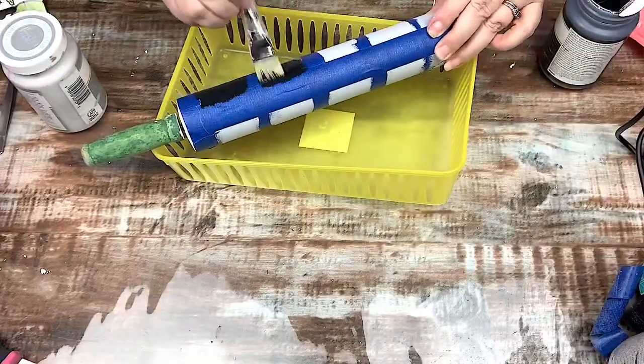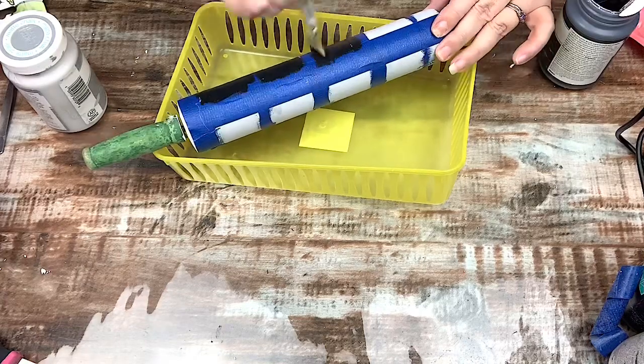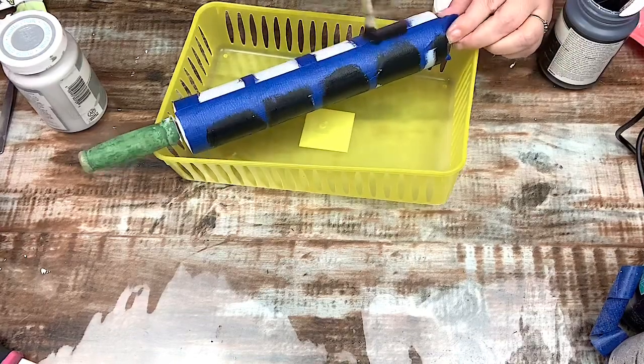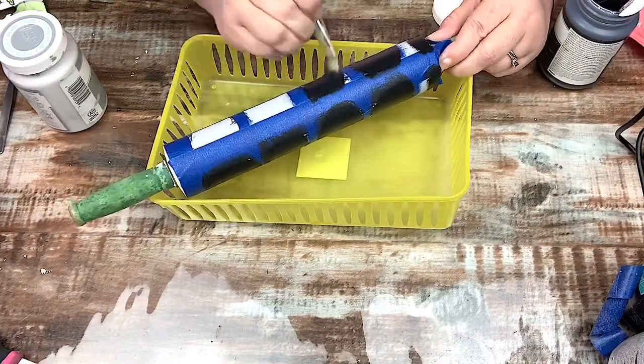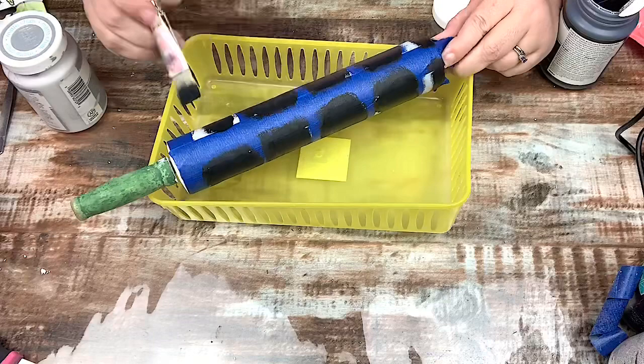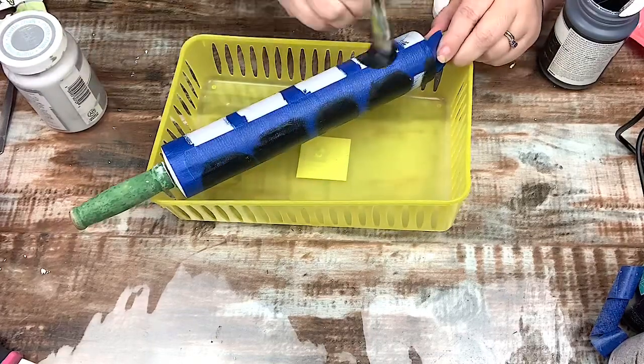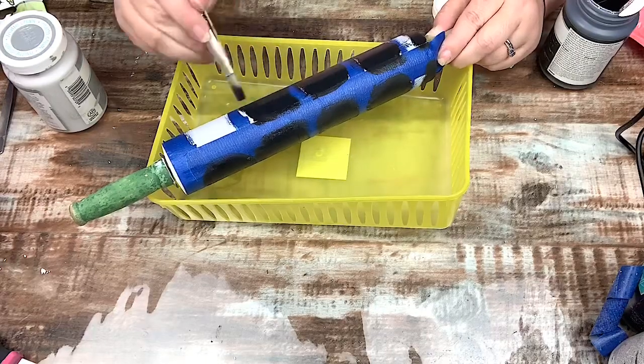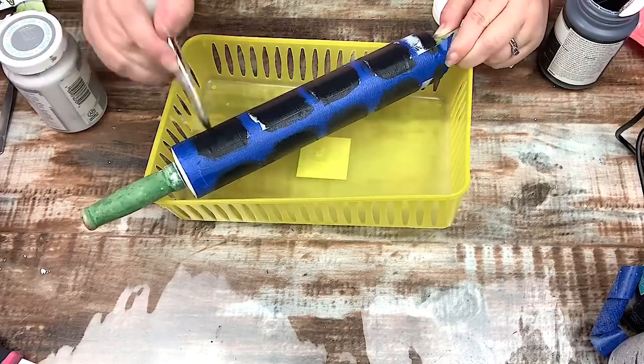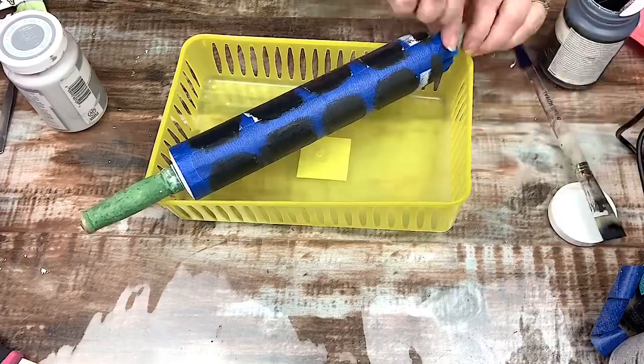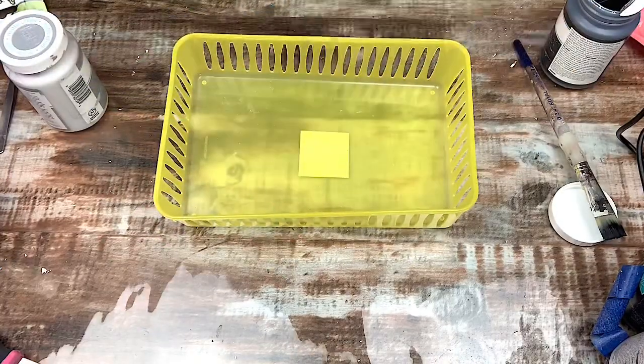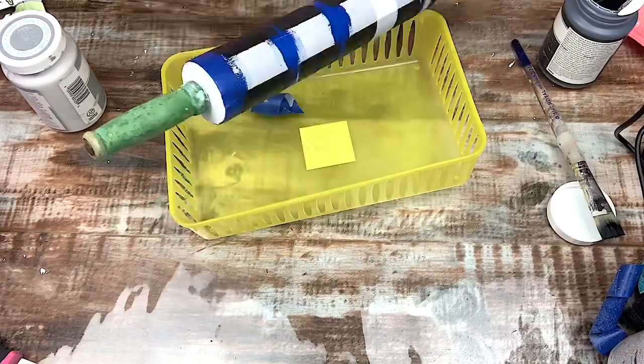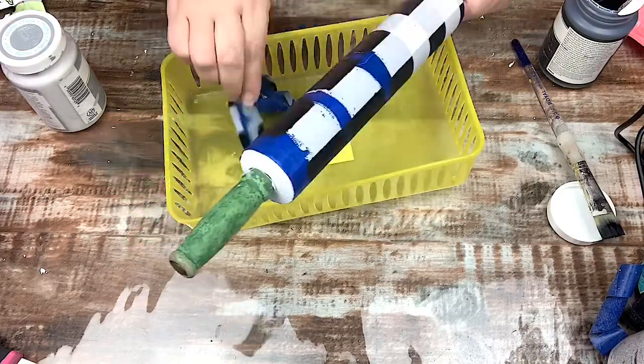And now going in with my final color, which is the Waverly Chalk Paint in Ink, and I'm painting the blocks, checks, squares, whatever. And then once that's done, I'll remove all of the tape. And then I use my blow dryer once again because I'm impatient. But this is my favorite part, removing all the tape, and you can see how awesome the buffalo check comes out.